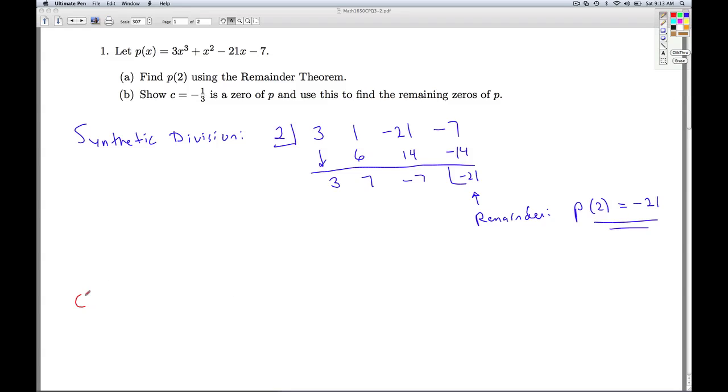Now let's say you wanted to just check your answer. We can find p of 2 the old fashioned way, namely, substituting in x equals 2. 2 cubed is 8. 8 times 3 is 24. 24 plus 4 minus 42 minus 7. So I get 24 plus 4 is 28 minus 49. And sure enough, that's negative 21. So that checks it for us.